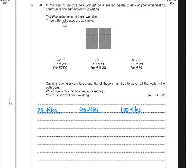For question three, we've got Treff Tiles, sells boxes of small wall tiles. Three different boxes are available. You can get a box of 25 for £7.50, a box of 40 for £11.20, or a box of 100 for £29.